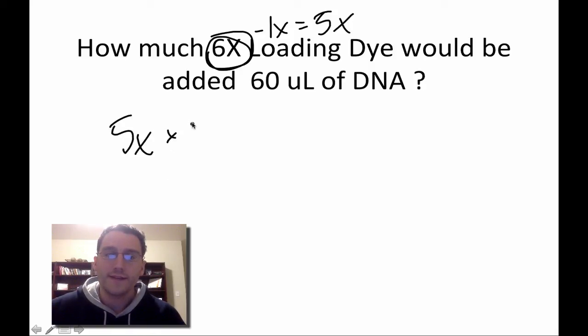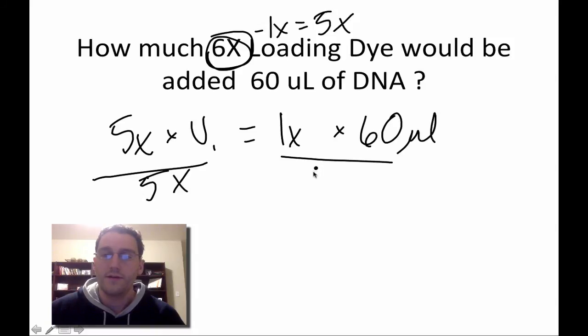So we have 5X times V1 is equal to 1X times 60 microliters. Divide both sides by 5X. X's cancel out. 60 divided by 5 means that V1 is equal to 12 microliters.